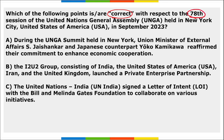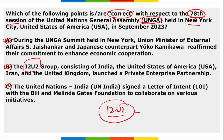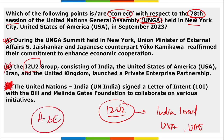Regarding the 78th session of UNGA held in New York: options A and C are correct, but B is wrong. The I2U2 group consists of India, Israel, UAE, and USA — not Iran and UK as mentioned in option B. This I2U2 grouping is important to remember.